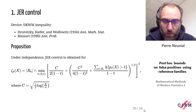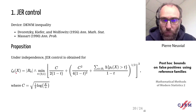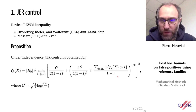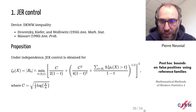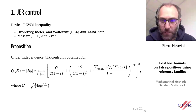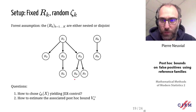To obtain JER control in this setting, we apply the DKW inequality (Dvoretzky–Kiefer–Wolfowitz, with tight constant due to Massart). Under independence, for a given family R_k, the correct calibration of ζ_k is an explicit formula — easy to compute — based on the number of p-values above a threshold t, taking a uniform bound over all possible thresholds t. The capital K here is the cardinality of the reference family.